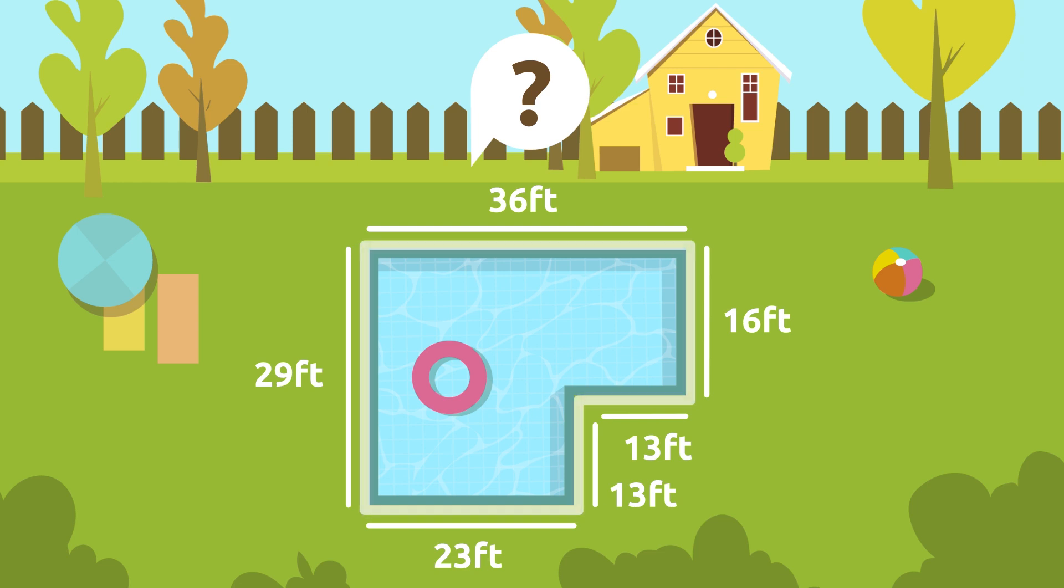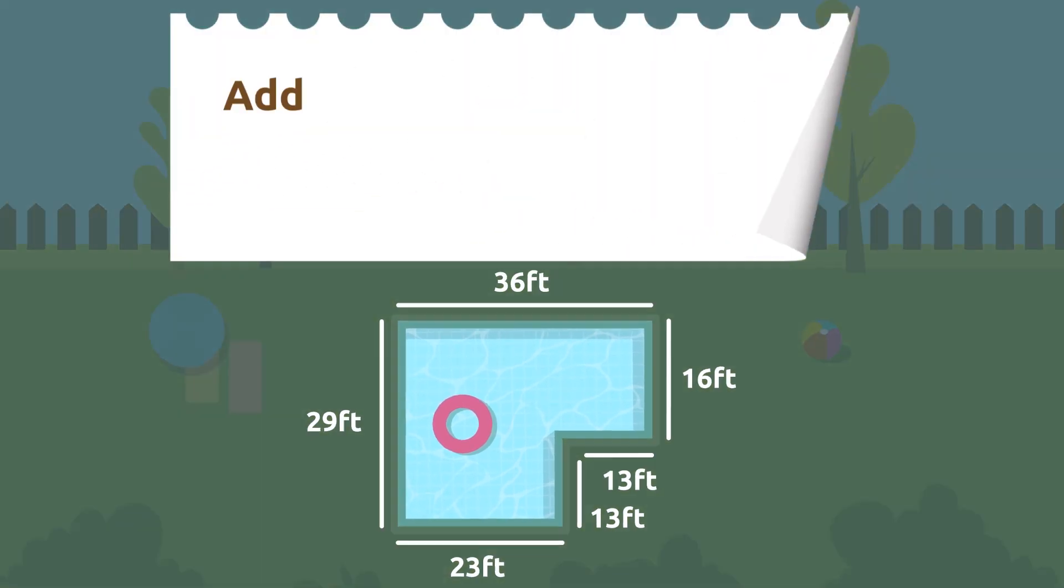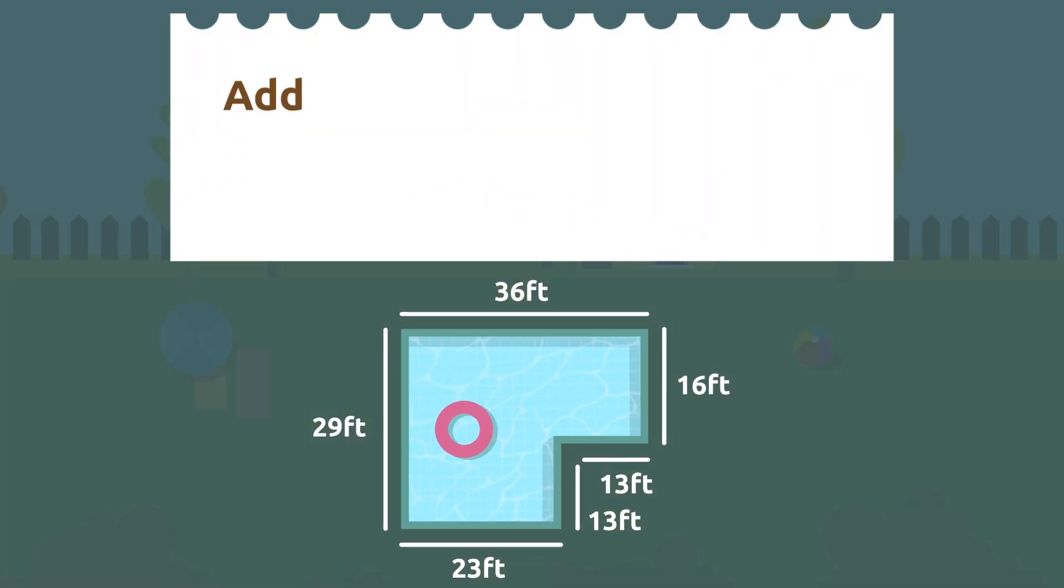To figure it out, we need to find the perimeter of this geometric figure. For this, we should add all its sides: 16 feet plus 36 feet plus 29 feet plus 23 feet plus 13 feet plus 13 feet, which equals 130.